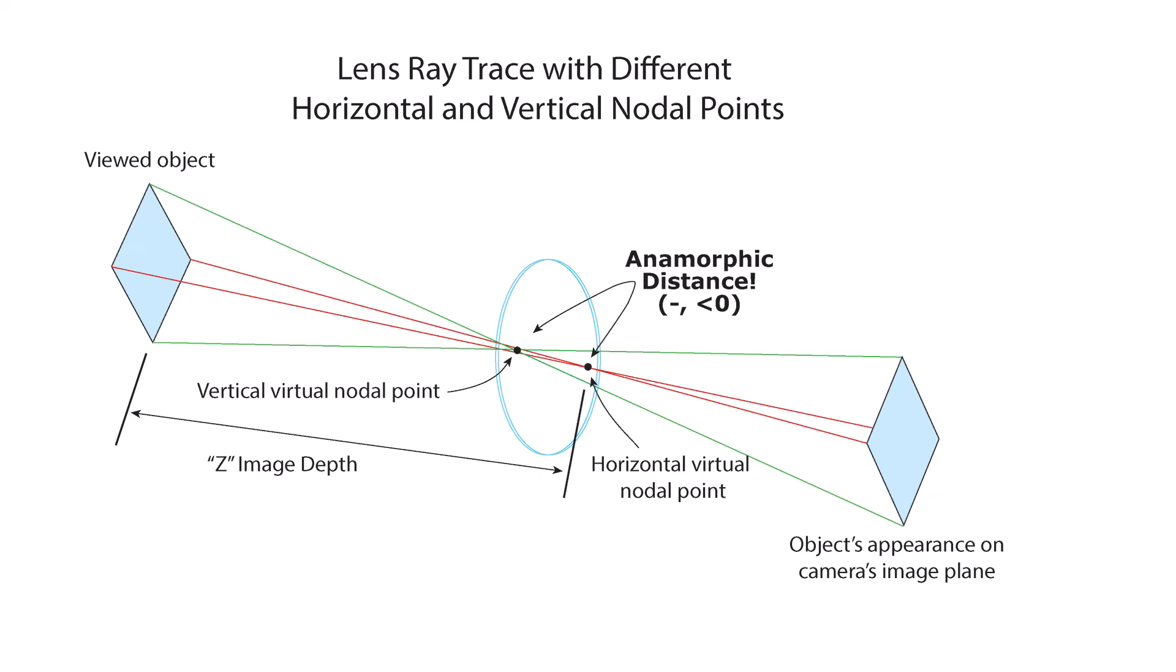Now that you see those two different nodal points, you can see how that can explain another common anamorphic lens quirk, where horizontal and vertical edges can have different optical sharpnesses. You can see how different motions of the two nodal points could explain why the image aspect ratio changes when you pull focus, another common anamorphic effect.